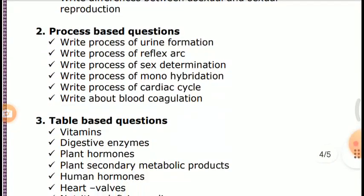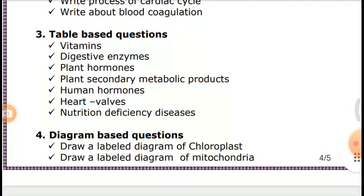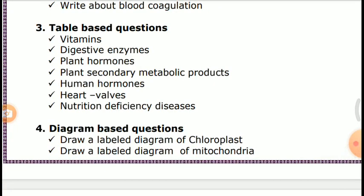Process-based questions cover the Ear, Reflex Arc, Sex Determination, and Monohybridization. Table-based questions include Vitamins, Digestive Enzymes, Plant Hormones, Plant Secondary Metabolic Products, Human Hormones, Heart Valves, and Nutrition Deficiency Diseases. Also the Cardiac Cycle and Blood Coagulation.